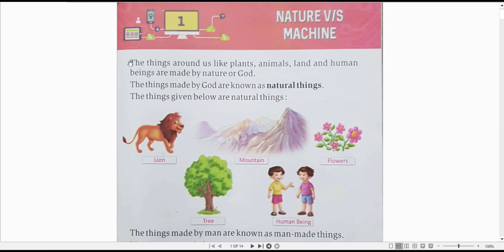So let's start reading. The things around us like plants, animals, land, and human beings are made by nature or God. The things around us like plants, birds, animals, land, and human beings are made by God.